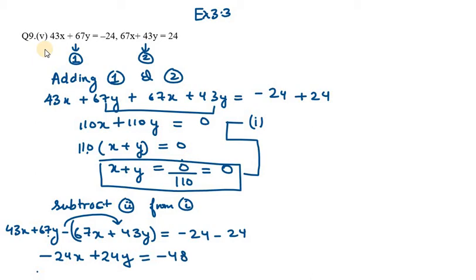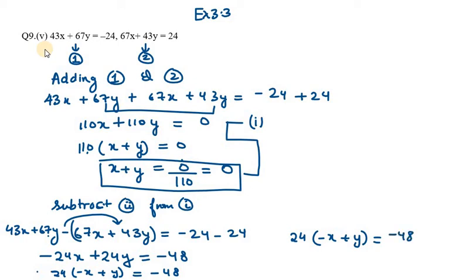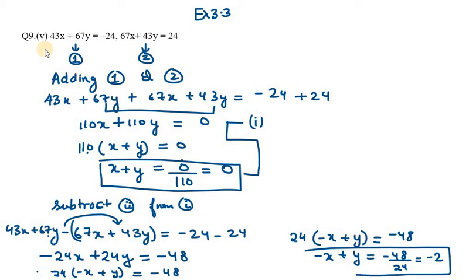And 67y minus 43y gives positive 24y, so we have minus 24x plus 24y equals minus 48. Taking 24 as common from the left hand side, we get minus x plus y equals minus 48 over 24, which is minus 2. So this is my equation number 2.